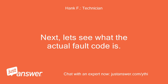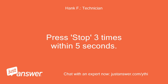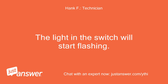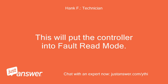Next, let's see what the actual fault code is. Go to the genset and use the switch on the set itself. Press stop 3 times within 5 seconds. The light in the switch will start flashing. If the light flashes 3 times, pauses for 3 seconds, and flashes 3 more times, press and immediately release stop 1 more time. This will put the controller in default read mode.